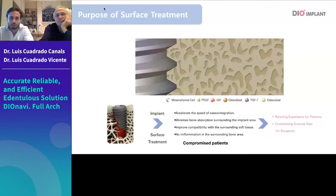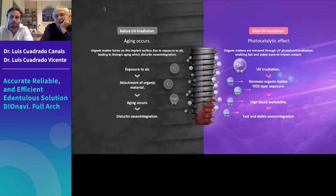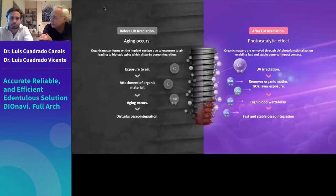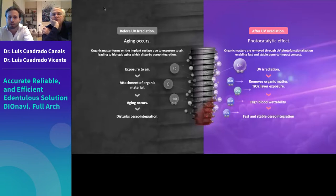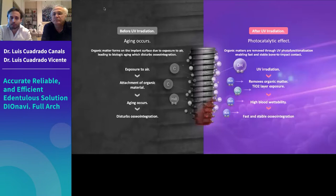The UV surface treatment removes organic particles and improves wettability, making the surface more hydrophilic. Without UV activation, the implant's exposure to air allows organic material to attach to its surface, causing aging and disturbing osseointegration. After UV irradiation, all organic materials are removed, resulting in high blood wettability and fast, stable osseointegration.